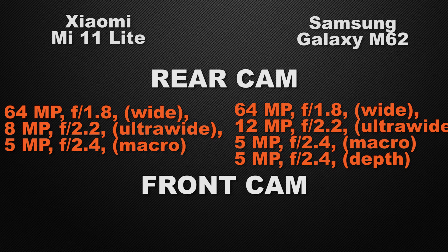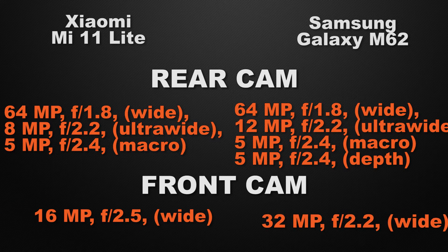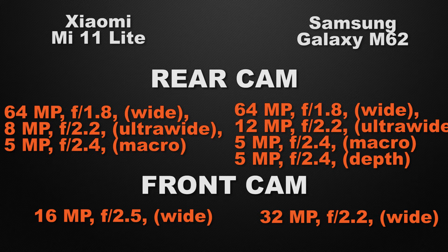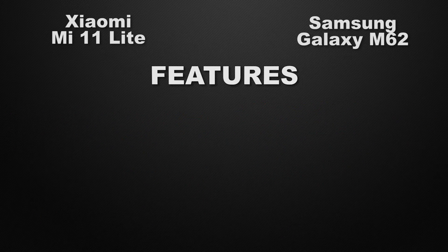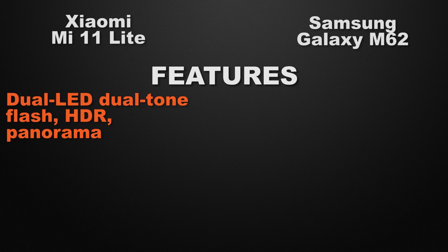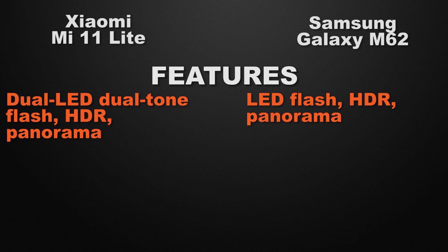For the front camera, the 11 Lite has a 16 megapixel wide camera, whereas the M62 has a 32 megapixel wide camera. So the winner here is M62 because it can take lower-noise photos in low-light conditions due to its lower aperture. Regarding camera features, the 11 Lite has dual LED flash, HDR, and panorama, while the M62 has LED flash, HDR, and panorama. So the winner here is the 11 Lite.